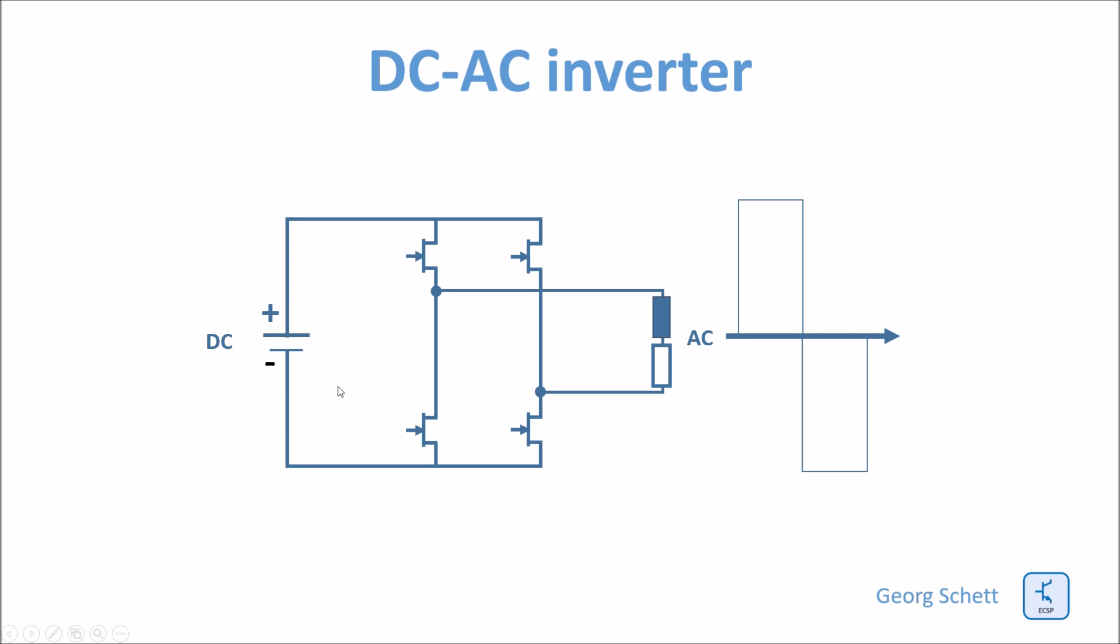Here we have a DC source and here we have a load and in between we have the inverter. The inverter consists of four switches. Two of the switches are always connected to one side of the load and the two other switches are connected to the other side of the load.